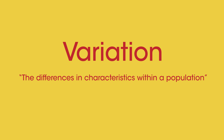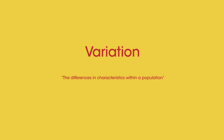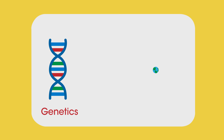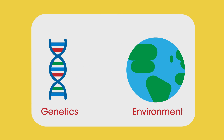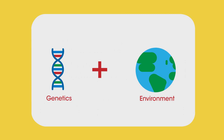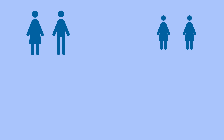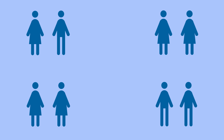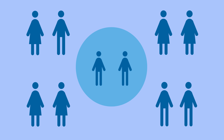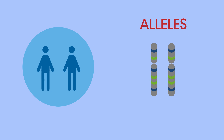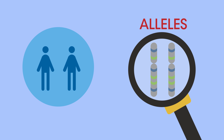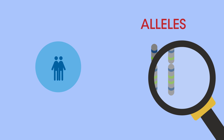Variation is the differences in the characteristics of individuals in a population. It can be due to genetics, the environment, or a combination of both. Let's start with genetics. Different members of a population have different DNA, unless they are identical twins. This means they have different versions of genes called alleles, and these alleles give rise to different characteristics.